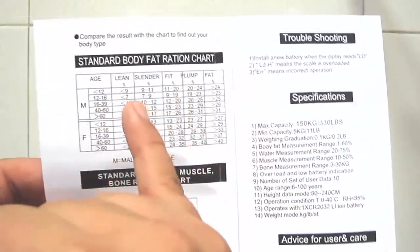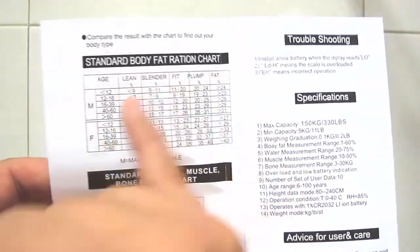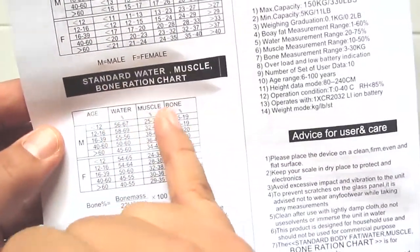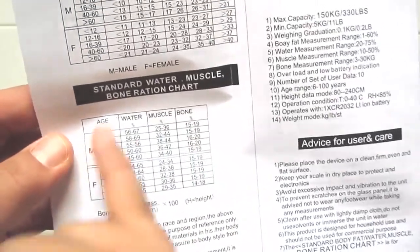On the reverse side, you can check your body fat percentage against lean, slender, fit, plump, fat by gender and age. And also the hydration, muscle and bone percentage by gender and age as well.